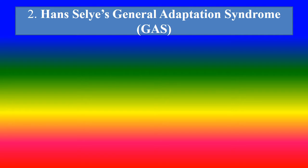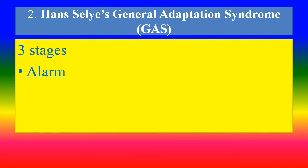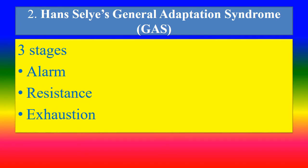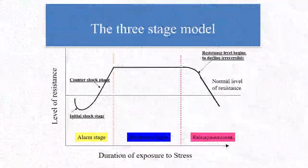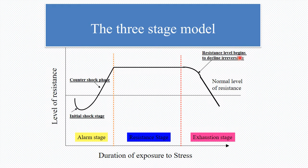Second Theory: Selye's General Adaptation Syndrome, or GAS. It has three stages: Alarm, Resistance, and Exhaustion. Looking at the graph of level of resistance versus duration of exposure to stress: the first stage is Alarm, consisting of an initial shock stage and a counter-shock phase. Next is the Resistance stage. Then the Exhaustion stage, where the resistance level begins to decline irreversibly below the normal level of resistance.